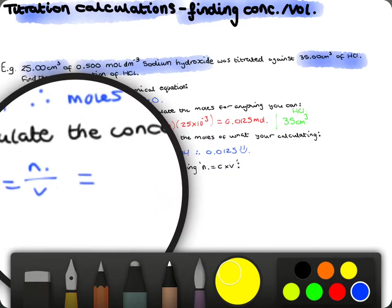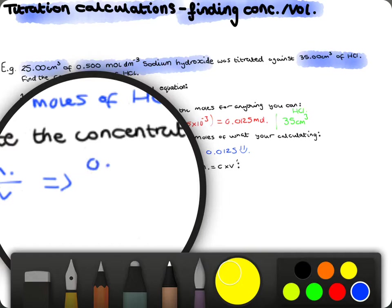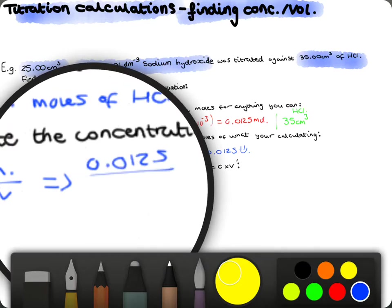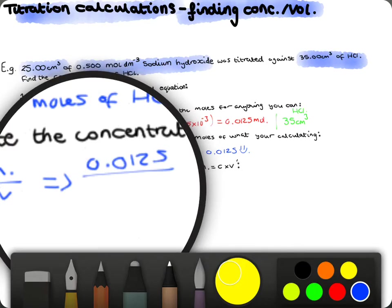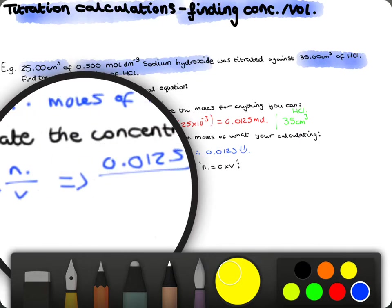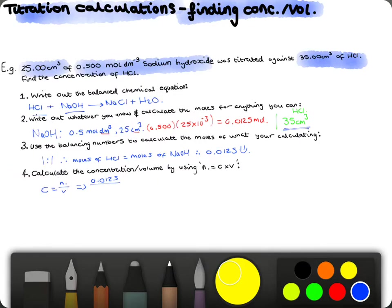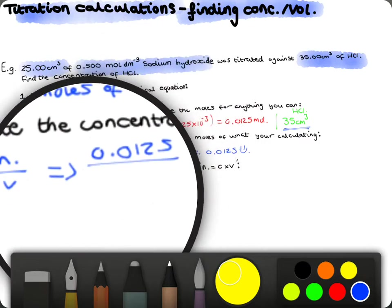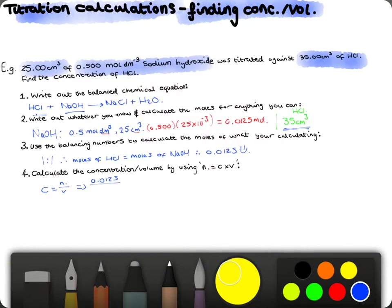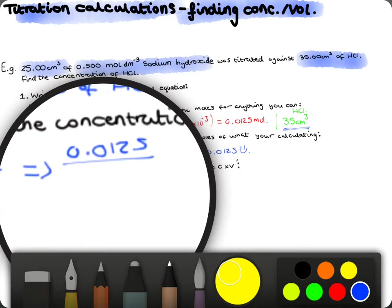So, therefore, subbing in our values, that's going to be 0.0125 divided by our volume, which was here. So, again, converting this into decimetres, that's 35 times 10 to the minus 3.